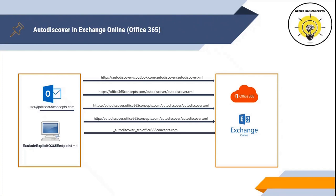The next Autodiscover lookup is SRV lookup, where Outlook makes a DNS query for _autodiscover._tcp.domain.com and tries to find the XML file. If Outlook doesn't find the XML file on this step, it moves to the Office 365 failsafe step, where Outlook tries to find the XML file from https://autodiscover-s.outlook.com/autodiscover/autodiscover.xml.